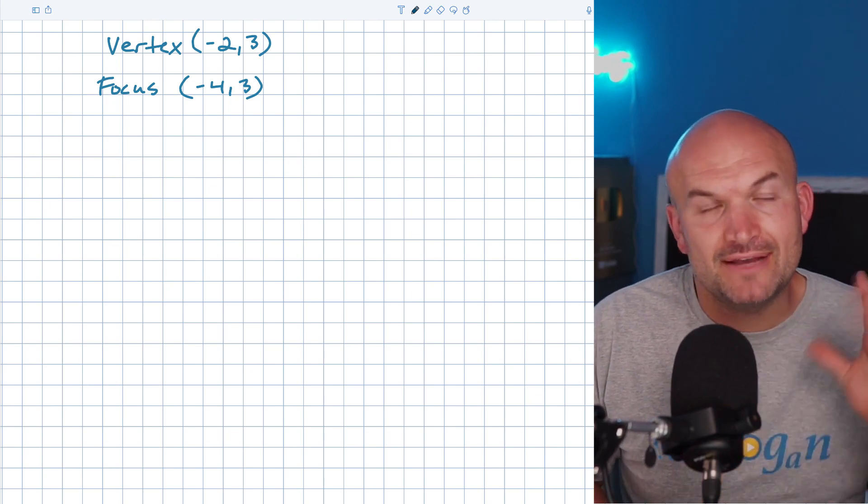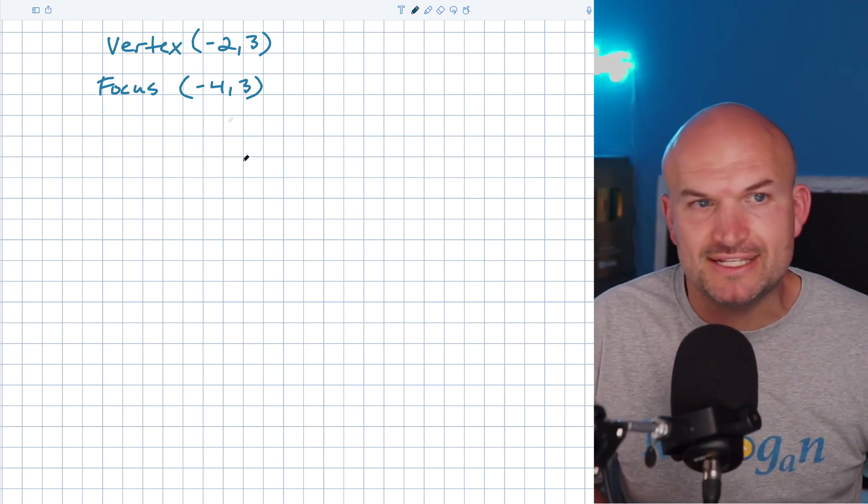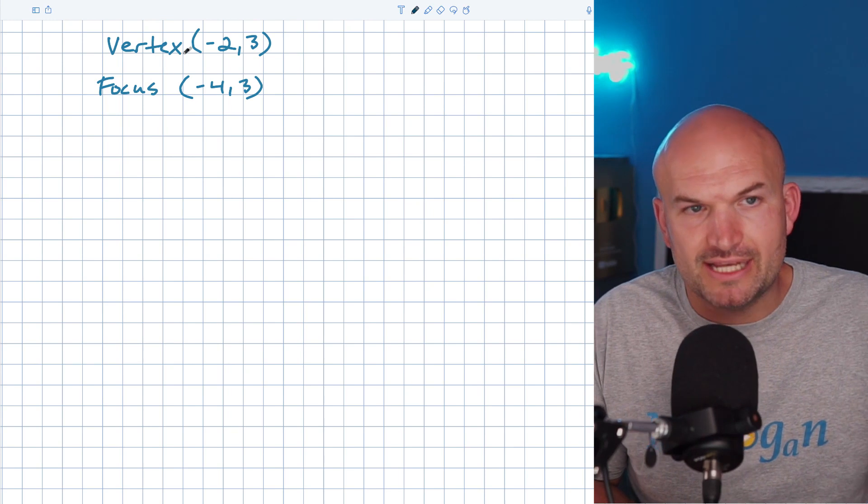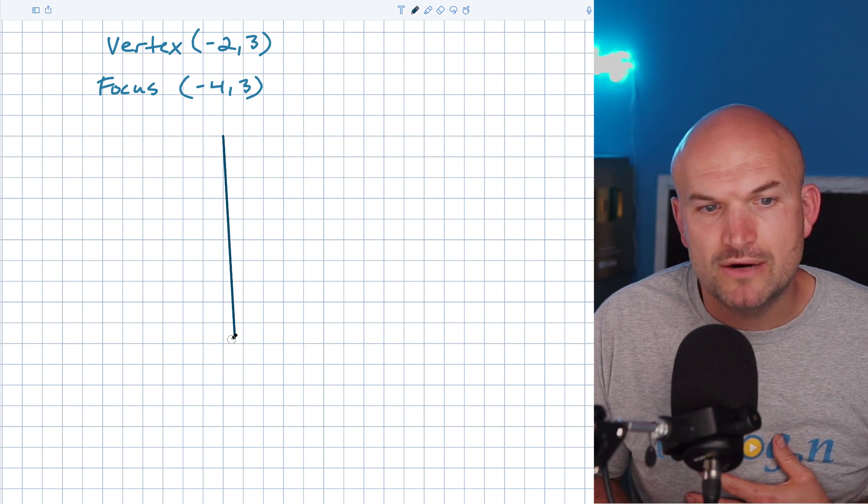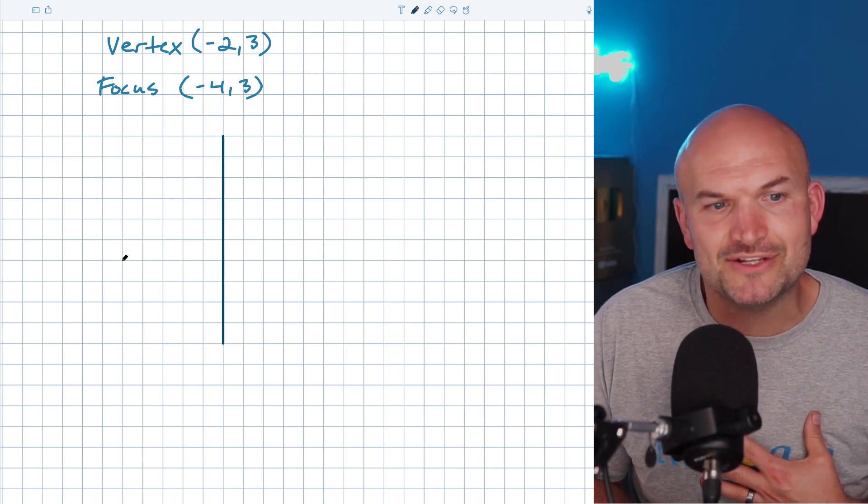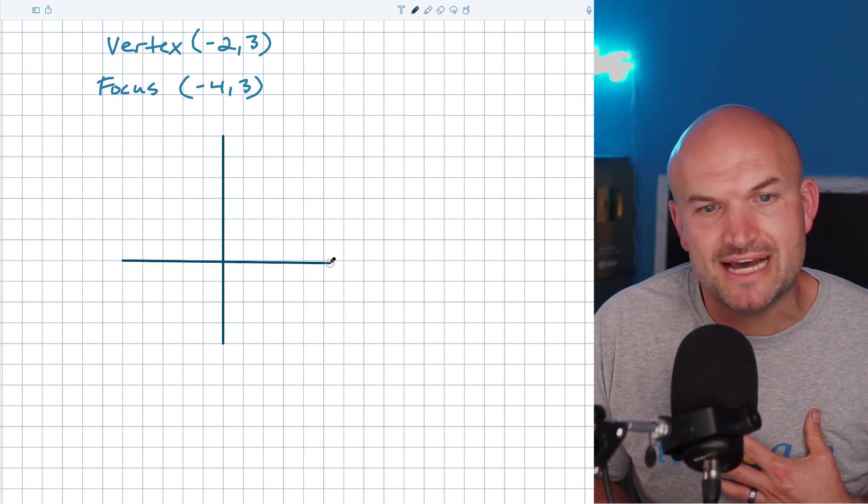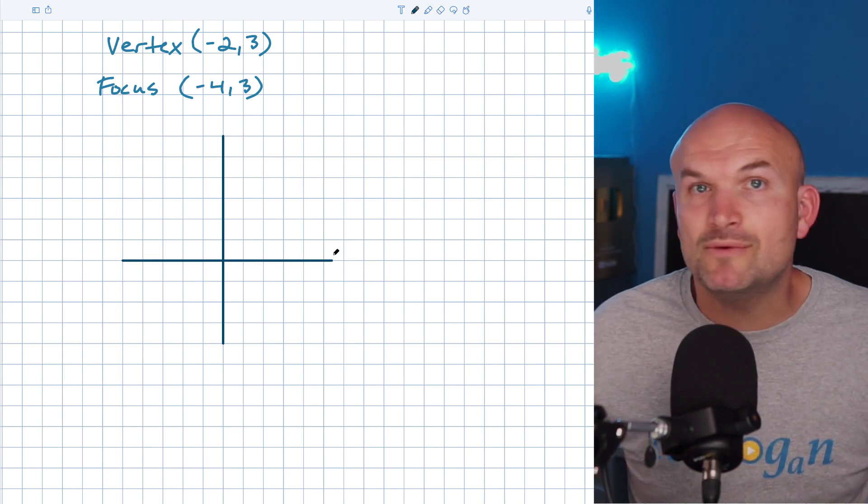The best way I teach my students to be able to do that is to simply just plot this information. If you're given the vertex, that's a point. And if you're given the focus, that's a point. So plot them on an XY coordinate. If you're not doing that, it becomes very difficult at times to understand exactly what's going on with the problem.